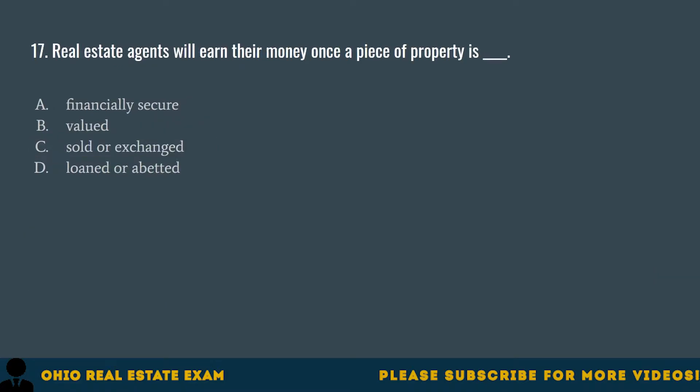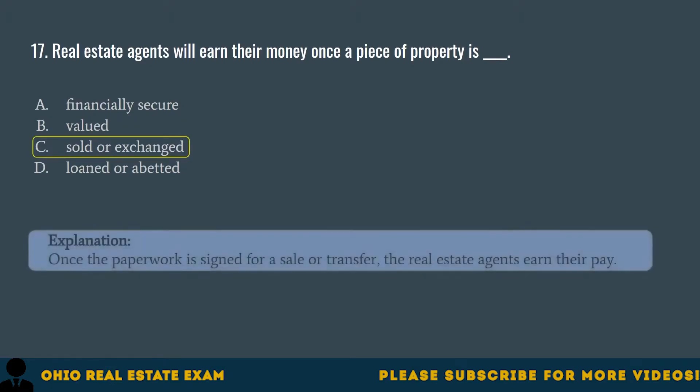Question 17. Real estate agents will earn their money once a piece of property is... A. Financially secure. B. Valued. C. Sold or exchanged. D. Loaned or abetted. The correct answer is C. Sold or exchanged. Once the paperwork is signed for a sale or transfer, the real estate agents earn their pay.